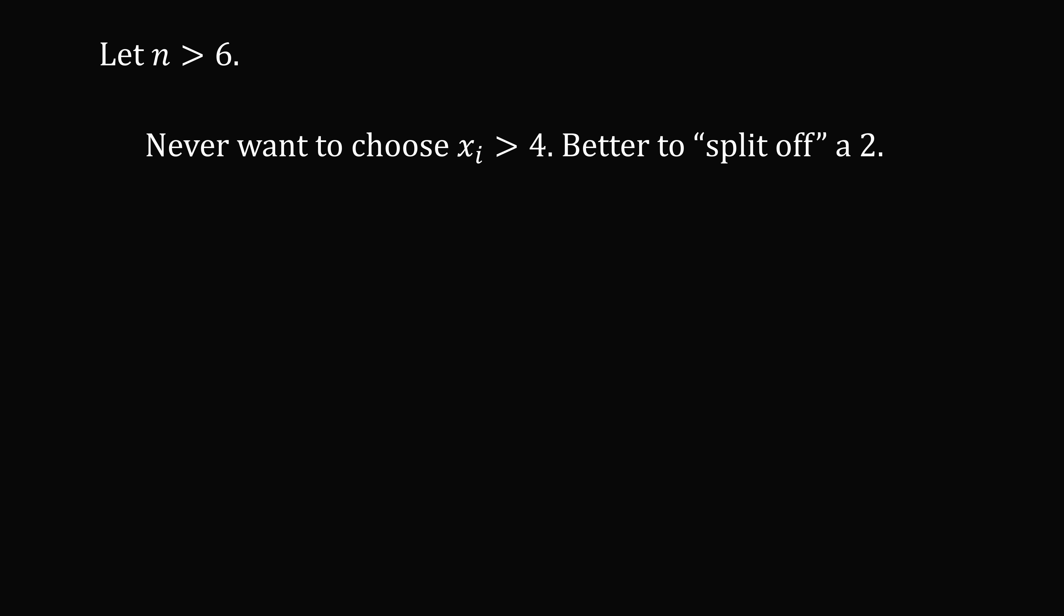We also never want to choose a number that's greater than 4. Why is that? Well, you could take that number that's greater than 4, and you could split it into two numbers. So we have the number minus 2 and 2. So that number will actually be a smaller product than x minus 2 and 2. So here's how we can see that. So we have 2 multiplied by x minus 2, that's equal to 2x minus 4. Now if x is greater than 4, this is larger than 2x minus x, but 2x minus x equals x. So we've shown that the product of 2 and x minus 2 is greater than x when x is greater than 4. So you never want to choose a number that's greater than 4.